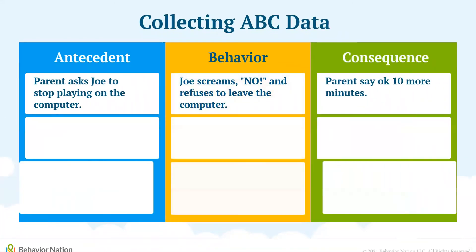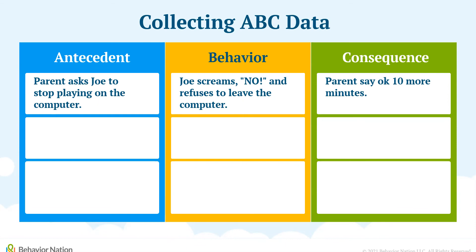Now that we understand the ABCs, let's look at how we can determine the functions of behavior by collecting ABC data. By collecting ABC data, we can understand the patterns in the antecedent and the consequences to determine the function of behavior. By doing this, we can alter our environment to decrease future behavior and teach new skills. One thing to be sure of when collecting ABC data is to be as objective as possible — write ABC data in a way that someone who has not observed the behavior can understand what happened just by reading it.